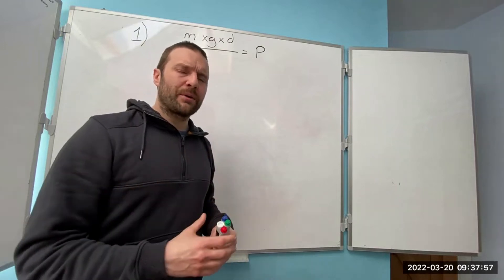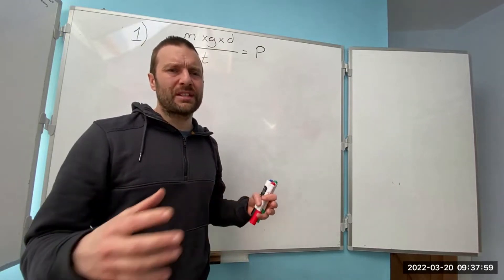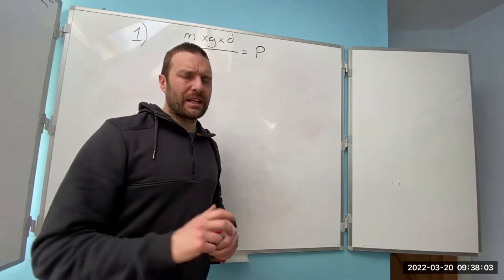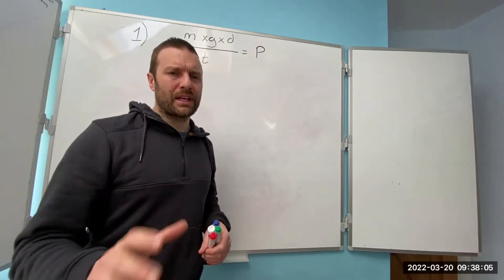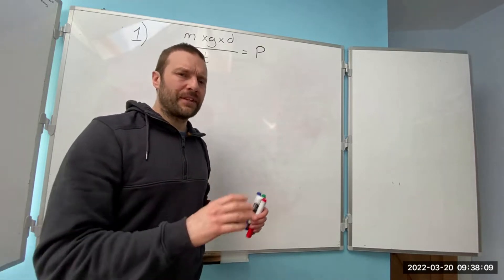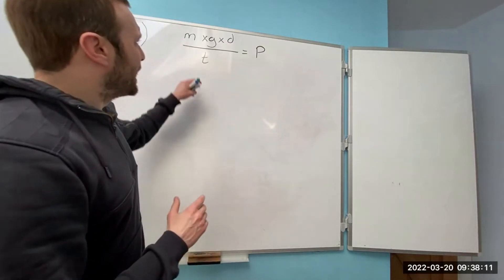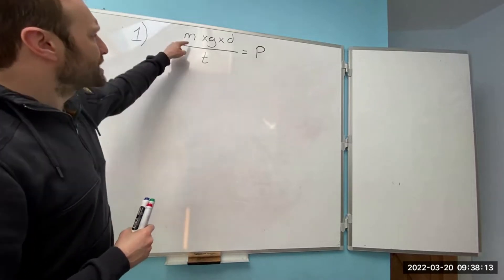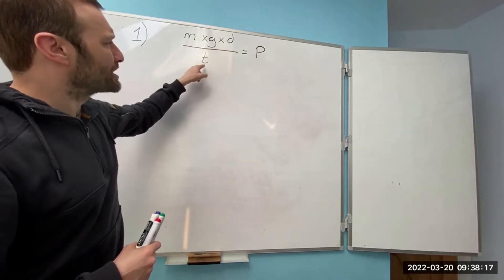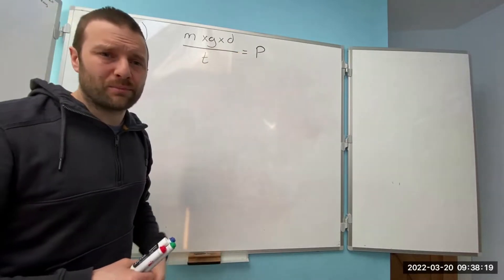If you haven't already watched the first video I suggest you do that because that's a much easier formula to start off with when you're learning transposition. For those of you that have seen that video, here we've got mass times gravity times distance divided by time equals mechanical power.